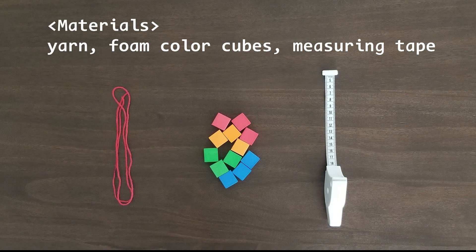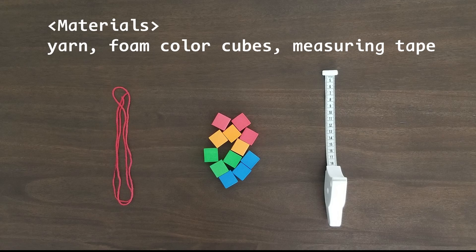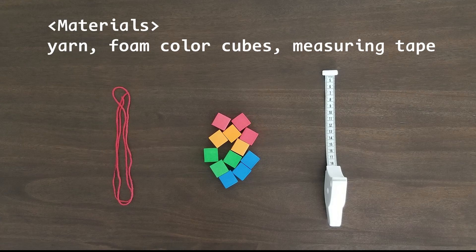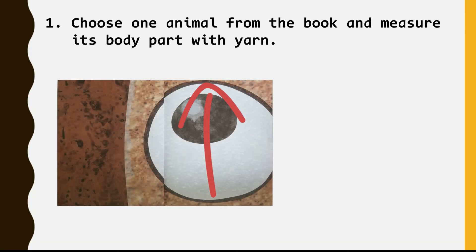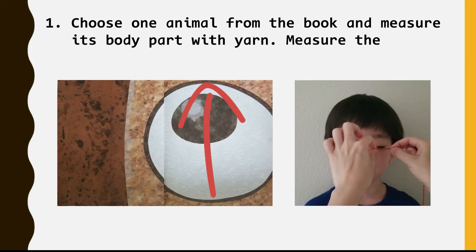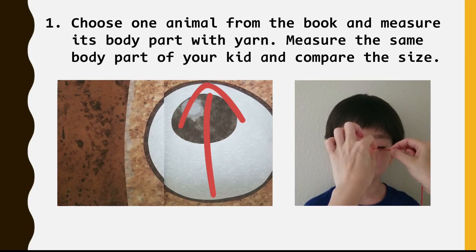To do this activity, you'll need yarn, foam collar cubes, and measuring tape. If you don't have foam collar cubes, you can use paper clips, unifix cubes, or blocks instead. First, choose one animal from the book and measure its body part with yarn. Measure the same body part of your kid and compare the size.